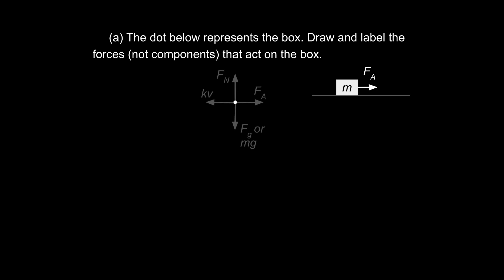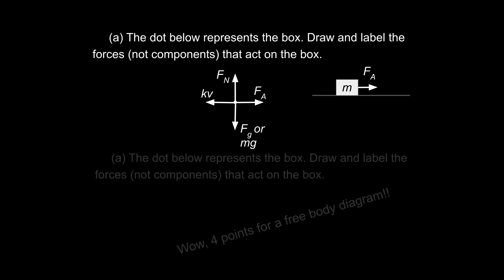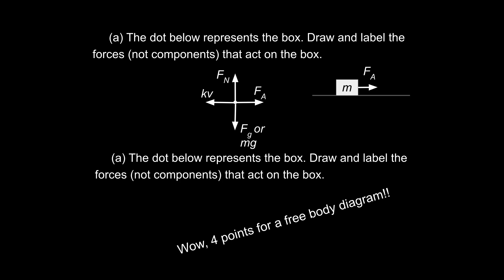Hopefully you've drawn them. You've got your forward force, your drag force or backwards resistive force, the force due to gravity — you can label that as F sub g or mg — and your normal force pointing up. Now here's what's crazy: those four forces will get you four points on this exam — four out of fifteen points just for drawing the free body diagram. Try to get easy points at the beginning of problems.